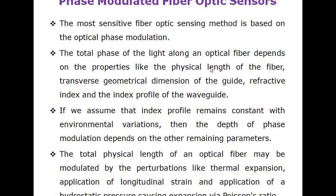A real-time example of phase modulation: consider our 3-phase electricity system with R phase, Y phase, and B phase. Each phase has a 120-degree phase difference. Only then will it create a rotating magnetic field; otherwise, no rotating magnetic field is created, the motor and all rotating machines will not work. If all phases are in the same phase, no magnetic field is created and the motor will not run.